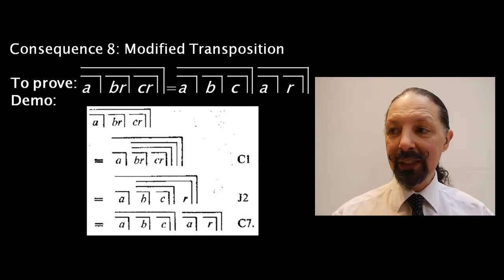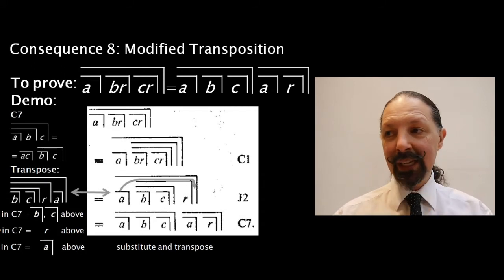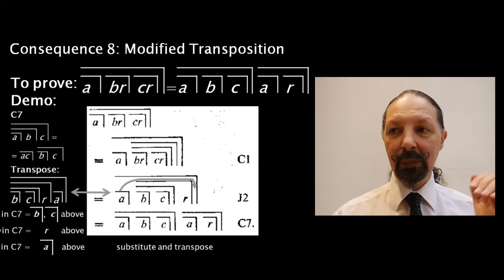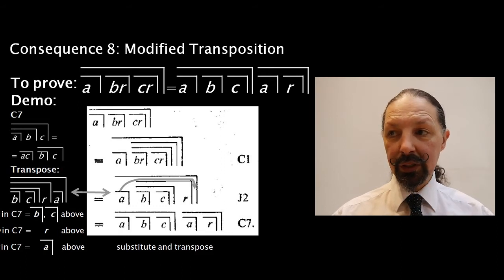And do you remember C7, where you needed to transpose the A term to the outside and use the A mark, B mark over 2, C mark over 2? And use that theorem to get the end result?